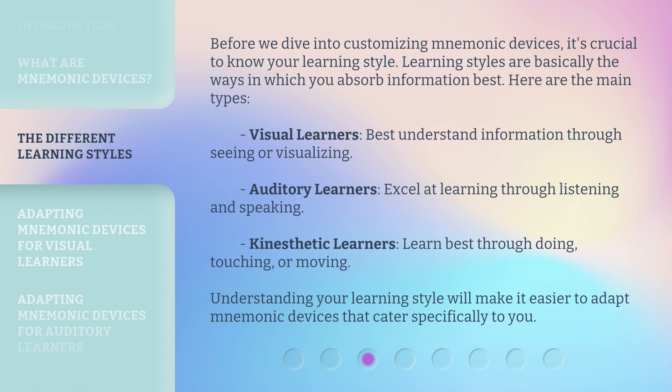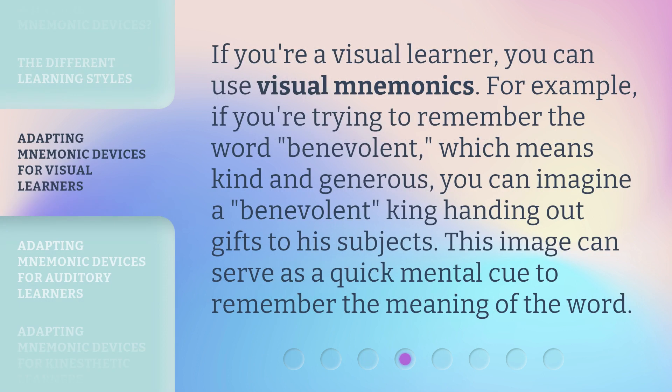Understanding your learning style will make it easier to adapt mnemonic devices. If you're a visual learner, you can use visual mnemonics. For example, if you're trying to remember the word 'benevolent,' which means kind and generous, you can imagine a benevolent king handing out gifts to his subjects. This image can serve as a quick mental cue to remember the meaning of the word.